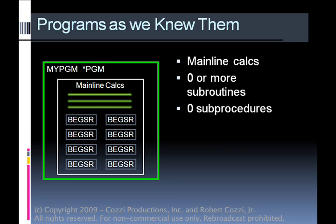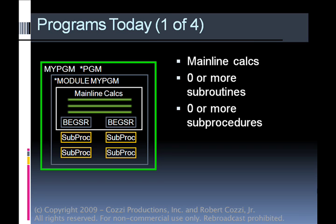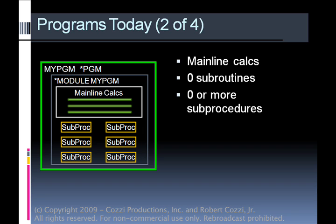Programs as we knew them had mainline calcs with code and subroutines — this is typical RPG 3, early RPG 4 program design. You have mainline calcs, zero or more subroutines, and no subprocedures. Programs today with RPG 4 look different: you have mainline calcs, you may have some subroutines from migrated programs, and zero or more subprocedures — so you can have both subprocedures and subroutines in the same program.